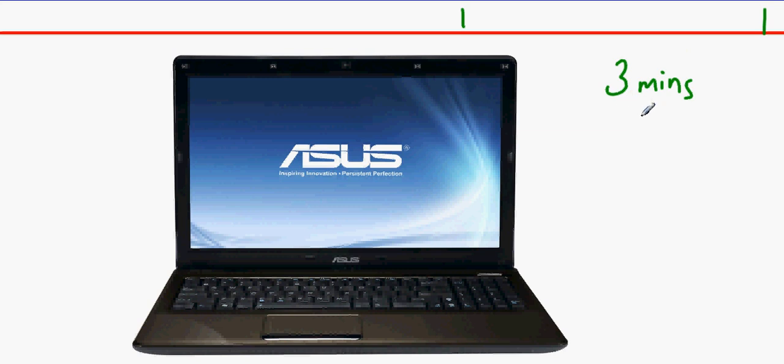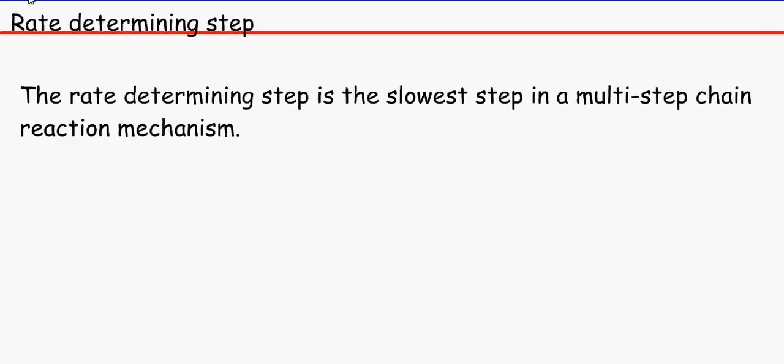And that is what we call the rate determining step because it is determining what rate this is. It determines how fast the whole process is going. And that is exactly the same for equations and for chemistry as well. The rate determining step is the slowest step in a multi-step chain reaction mechanism. And a reaction mechanism is a series of steps that all together make an overall reaction.